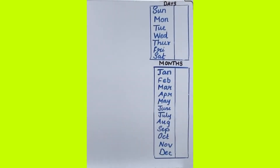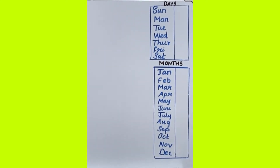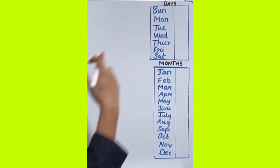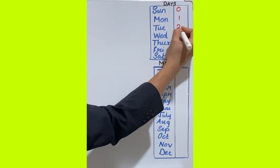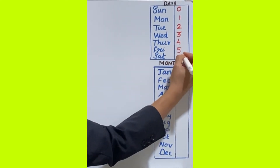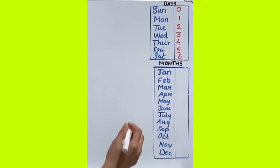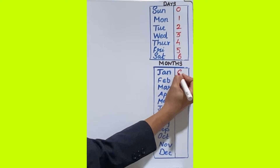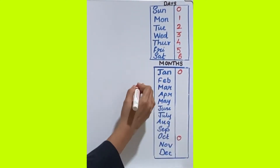To solve any type of calendar questions, you need to memorize some tables. The first is the days table. Each day has some values: Sunday is 0, Monday 1, Tuesday 2, Wednesday 3, Thursday 4, Friday 5, Saturday 6. Then coming on to the months table.